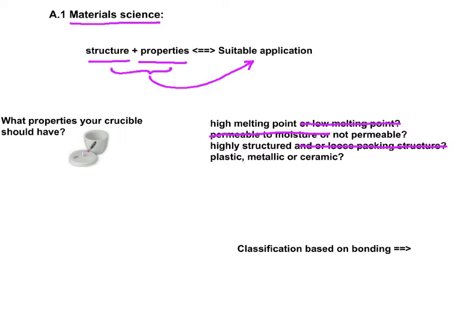Now the last question: would you like it to be made out of plastic? Definitely not. Metallic? Not necessarily, because its melting point could be lower than what you're trying to cook or react in it. So ceramic is a fine choice, but ceramic is brittle and it will shatter once it's dropped even a few inches from the table.